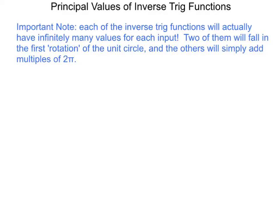Now we're going to apply the concept of principal values to the inverse trig functions. When we had a square root function, there were two answers; when we had a fourth root function, there were four answers. When you have an inverse trig function, there are actually infinitely many values for each input. Specifically, two of them fall within the first drawing of the unit circle, and all the others are just multiples of 2π.